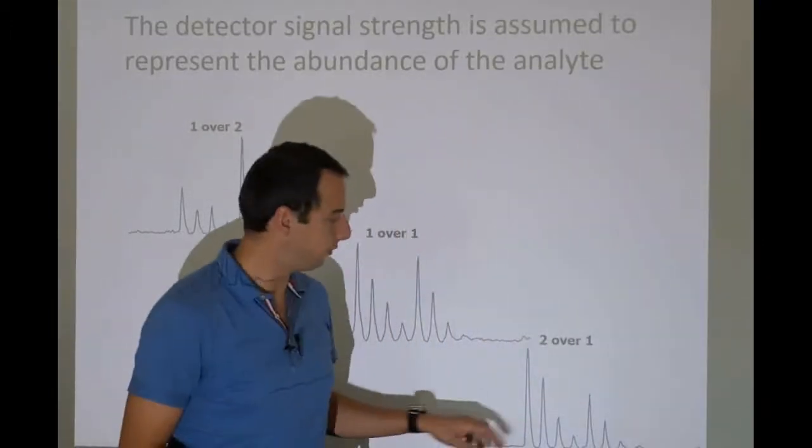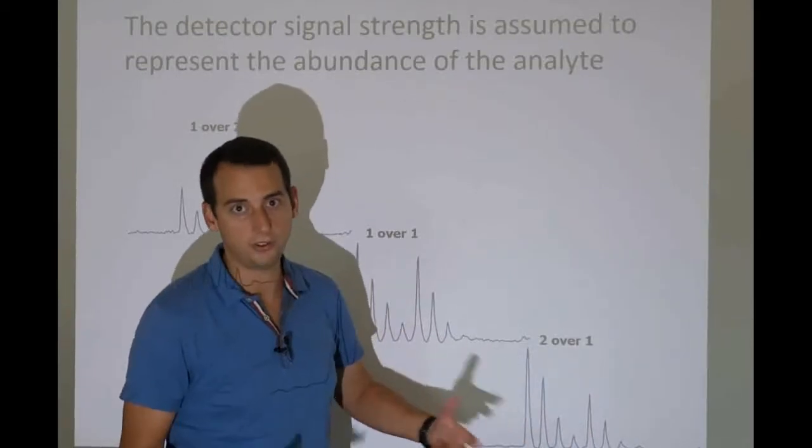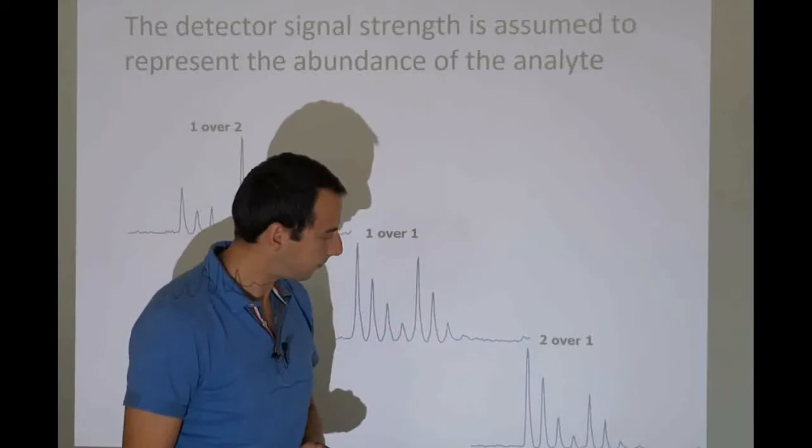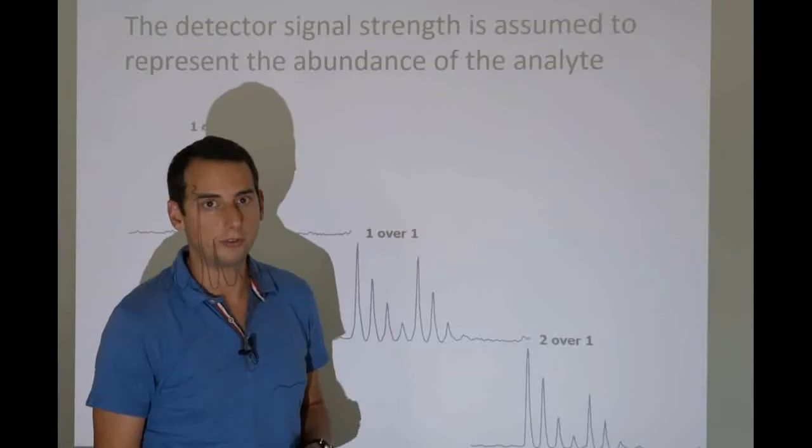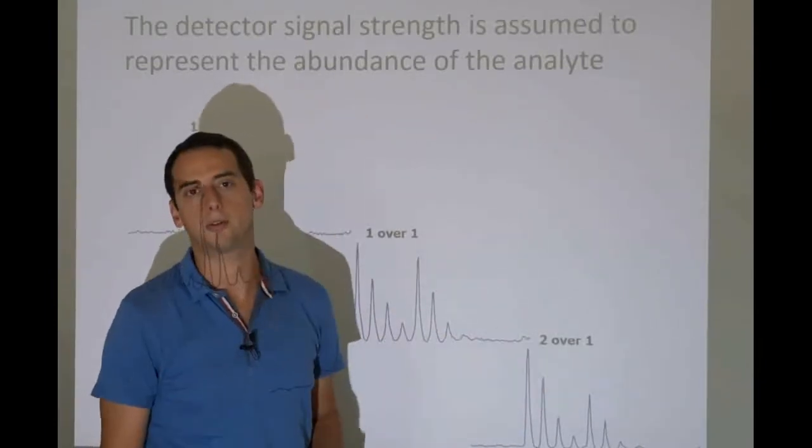And here, obviously, we have the opposite situation. 10 nanograms per ml for a spike in artificial heavy neutron. And this is the real biological analyte that we are interested in. And we can see that there's two times as much. So this will be 20 nanograms per ml.